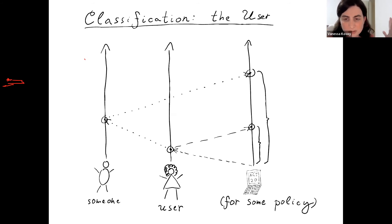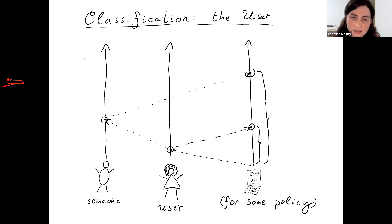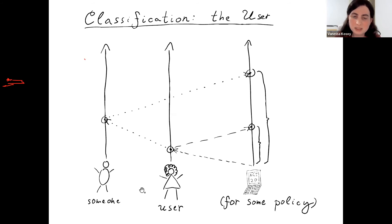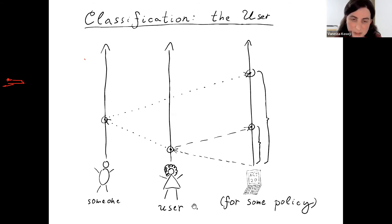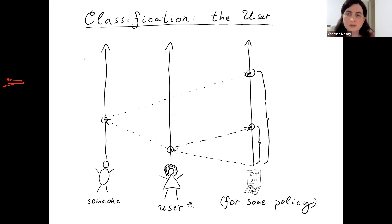We can generalize to multiple users, but that's not where the core difficulty is. For now, let's simplify and imagine there's a single user, and we want to make our AI follow the preferences of that single user.